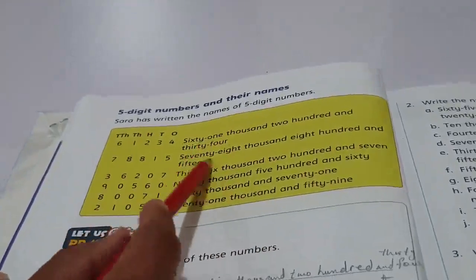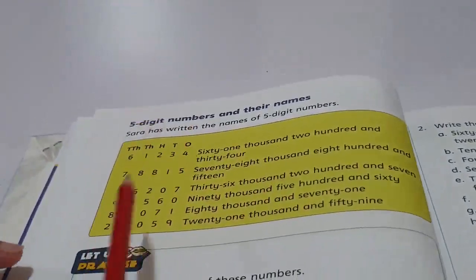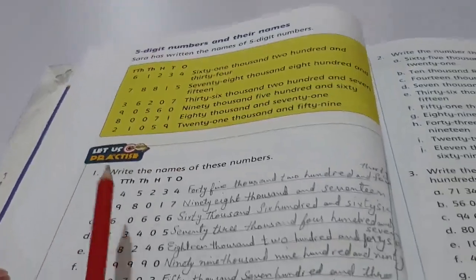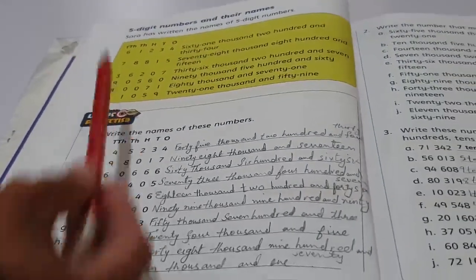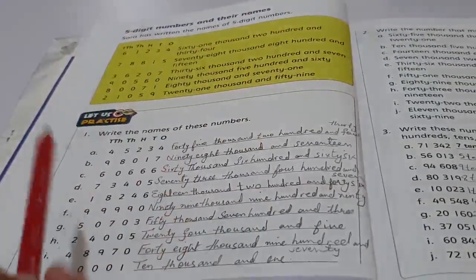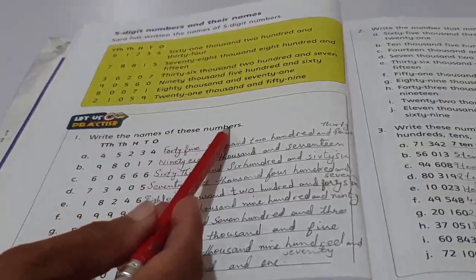61234 - now we are going to read their names: sixty-one thousand, two hundred and thirty-four. There are a few examples given there. Now we are going to do the practice of five digit numbers and their names. Write the names of these numbers.